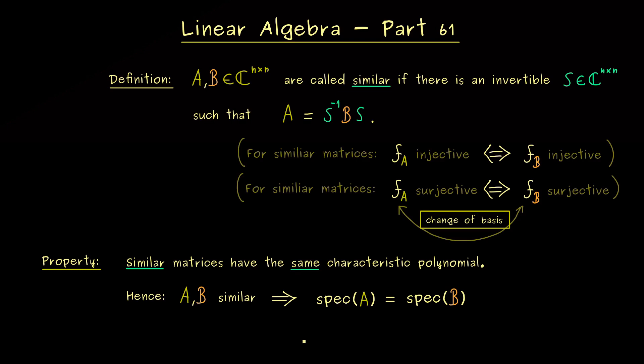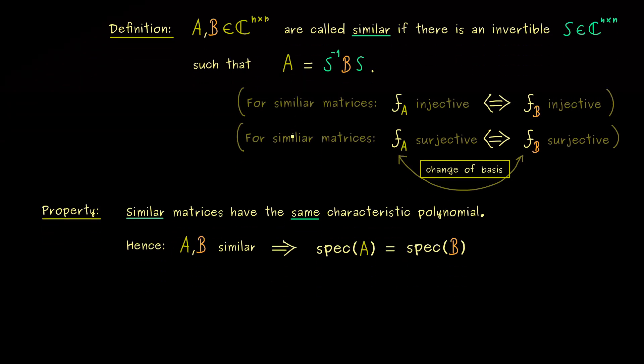Therefore, you should remember, such a transformation with an invertible matrix S does not change the spectrum and not the algebraic multiplicities. And at this point, you can also think about what happens with the geometric multiplicities.